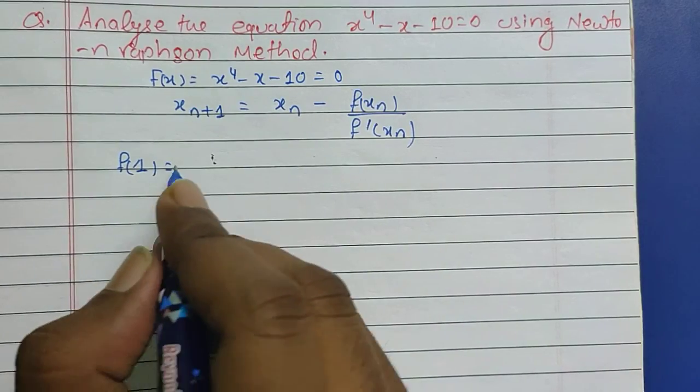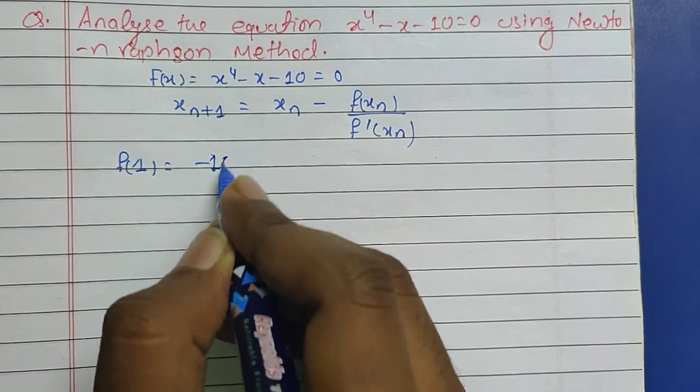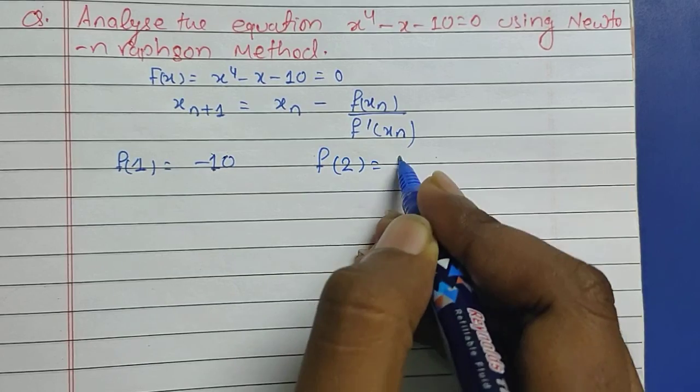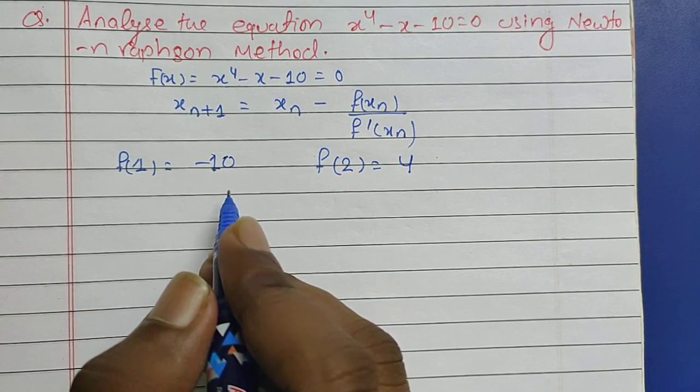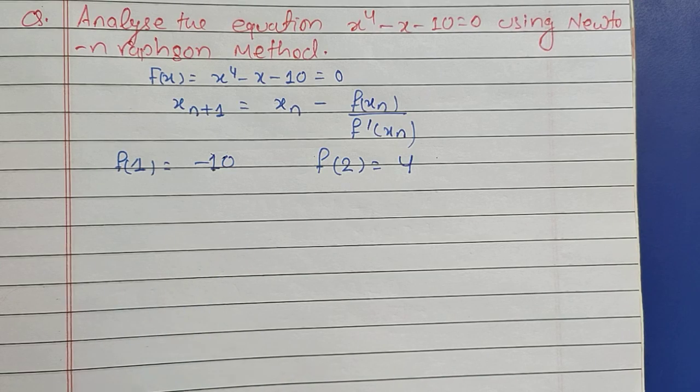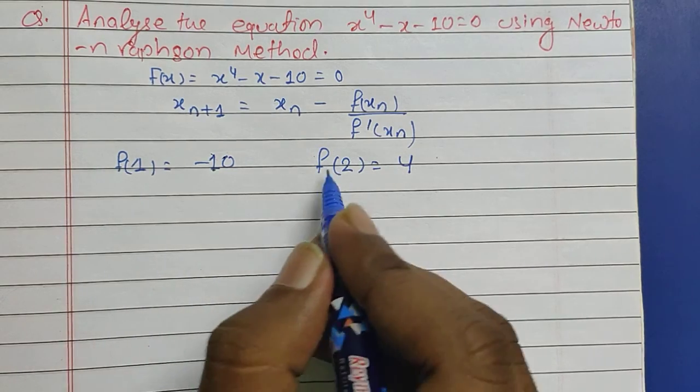Now I have to find the first root. For finding the first root, what I need to do is we have to take the number which gave us positive value as x_0.